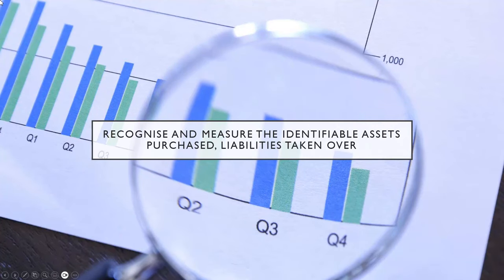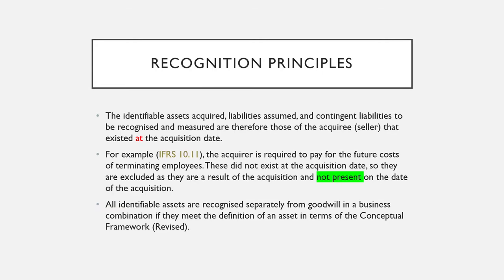The third step: recognize and measure the identifiable assets purchased or the liabilities taken over. This is a very technical area. The identifiable asset acquired must be identifiable — I need to be able to separate this asset from other assets. This doesn't require you to be able to touch it, because sometimes you can get intangible assets. So it's identifiable assets acquired, liabilities assumed, and contingent liabilities to be recognized and measured.